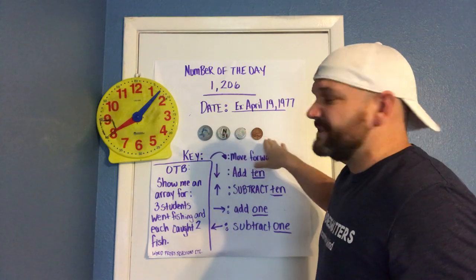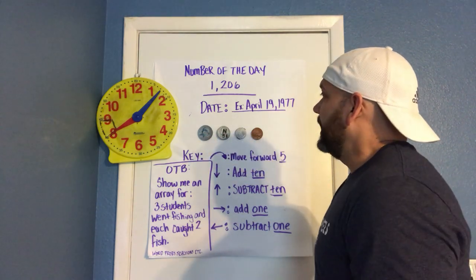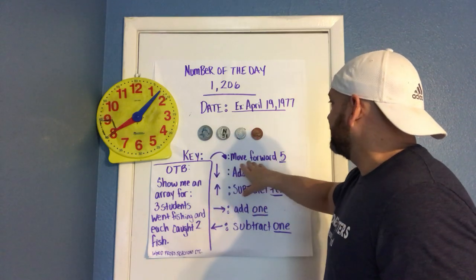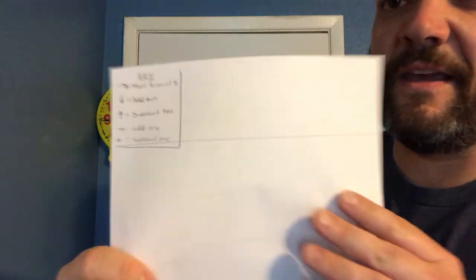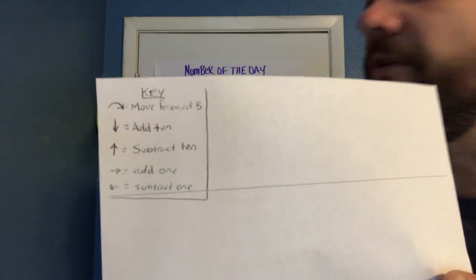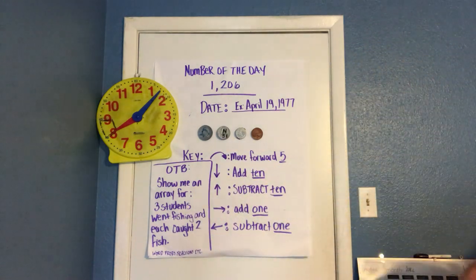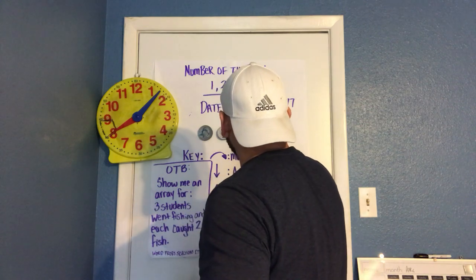On the back of the sheet that the kids do, I have a key here, and this is for a little game we play. I'll usually pick a separate number. Let's just say that I pick 10 here.